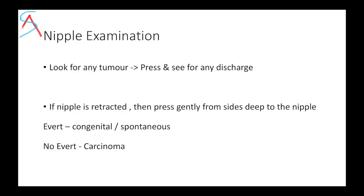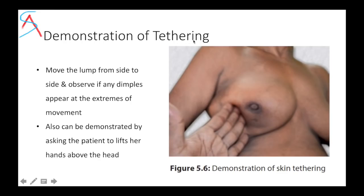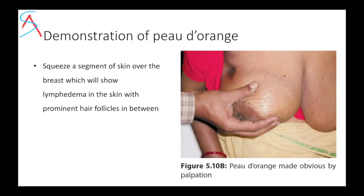In nipple examination, look for any tumor just below the nipple, press the nipple and look for discharge. If there is nipple retraction, press gently from the side deep to the nipple — if it averts, the cause could be congenital or spontaneous; if it does not avert, the cause could be breast carcinoma. Tethering can be demonstrated by moving the lump from side to side and observing for dimpling appearing at the extreme of movement, or by telling the patient to lift her arm. Peau d'orange is demonstrated by squeezing a segment of skin over the breast, showing lymphedema with prominent hair follicles.